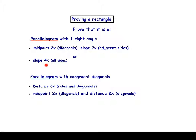Another way to prove you have a parallelogram with one right angle is to simply do the slope four times. In doing that, you will have both pairs of opposite sides parallel, making it a parallelogram. Additionally, you can look at one pair of adjacent sides, note that their slopes are negative reciprocals, which means the lines are perpendicular, forming a right angle.